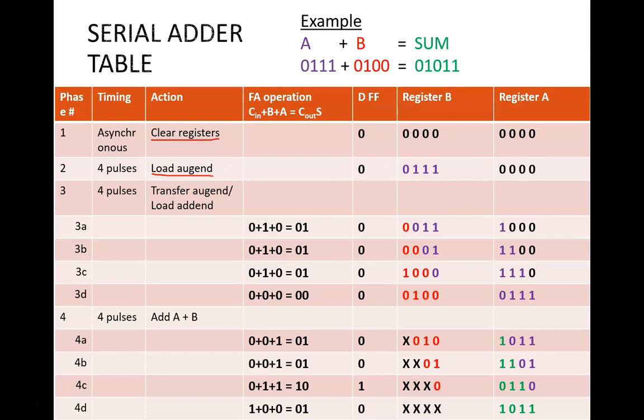The second phase is to load in the augend to register B. This is just basic shift register operation, so I don't list out all four steps here. But the key is that the augend, or A value, is currently stored in register B.